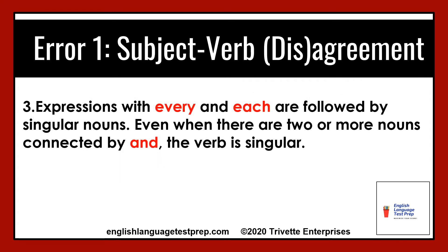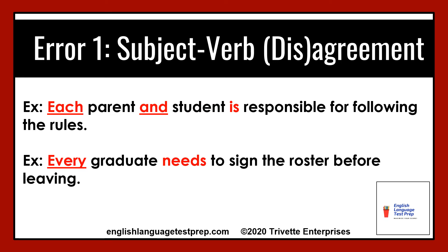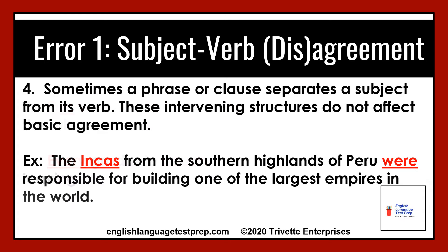Point number three: expressions with every and each are followed by singular nouns. Even when there are two or more nouns connected by AND, the verb is singular. For example, each parent and student is responsible for following the rules. Every graduate needs to sign the roster before leaving. Yes, it may sound a bit strange, but English is a strange language, as you know by now.